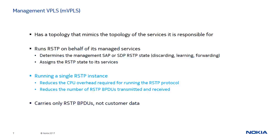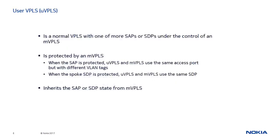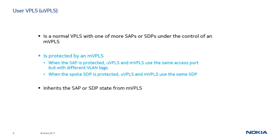Running a single RSTP instance reduces the CPU overhead associated with running the RSTP protocol, as well as the number of RSTP BPDUs transmitted and received. It is important to note that MVPLS does not carry any user data — it carries only RSTP BPDUs. A User VPLS or UVPLS is a normal VPLS with one or more SAPs or SDPs under the control of an MVPLS. In the case where its SAP is being protected, both UVPLS and MVPLS must use the same access port but with different VLAN tags. And when its spoke SDP is being protected, both UVPLS and MVPLS must have the same SDP.